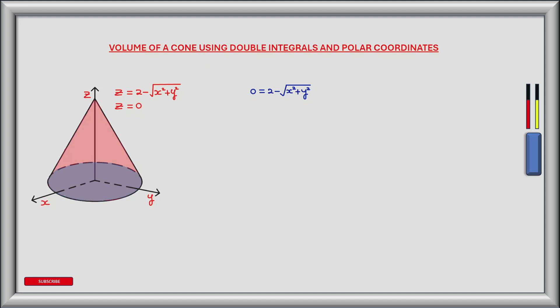The first step in finding the volume is to define the region over which the volume is computed, so we need to find where our two equations are equal. We have both equations in terms of z so we can equate the two. This gives us 0 equals 2 minus the square root of x squared plus y squared. Adding the square root of x squared plus y squared to both sides and squaring gives us x squared plus y squared equals 4.